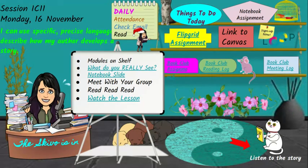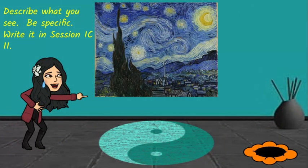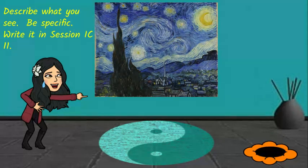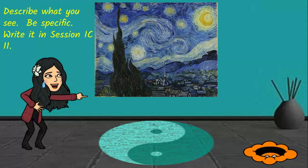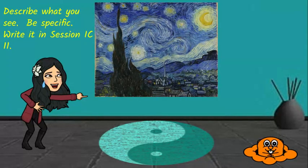Today we're going to start out with a visual image rather than a reading — it's going to be a painting. If you've explored my welcome page, you may recognize it. In your IC notebook — your Investigating Characterization notebook, not your book club notebook — under session 11, I want you to take a moment to describe what you see in this painting. Pause this video, write down several things, and then start the video again.